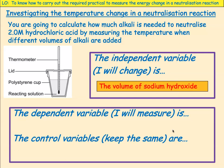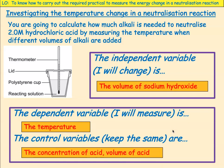The dependent variable — what we're measuring — is the temperature that it reaches. What we need to keep the same: the concentration of the acid, kept at 2 molar; the volume of the acid; and we probably also need to keep the same lid and the same cup — we're not going to change anything like that between reactions.